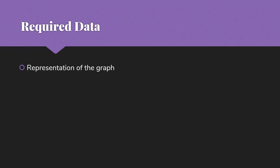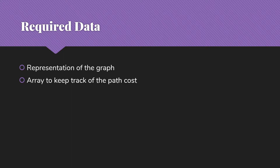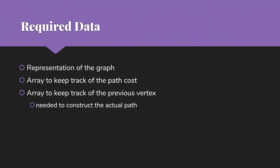Let's take a look at what we're going to need to actually do this. Obviously we need a representation of the graph itself — what vertices do we have, what edges are connecting them. Then we're going to need an array to keep track of the path cost. We're also going to need an array to keep track of the previous vertex — when we locate a particular vertex, we need to know which vertex we came from, which vertex is on the other end of the edge we used to get here. This is necessary to construct the actual path.